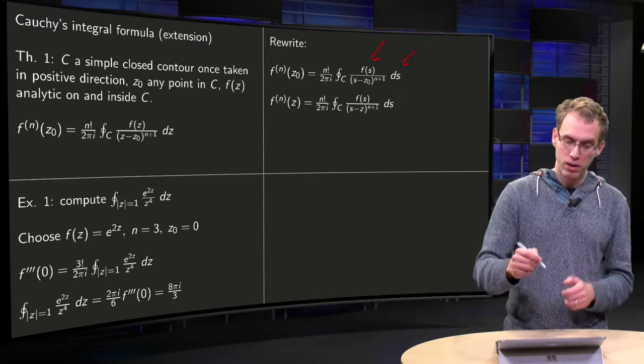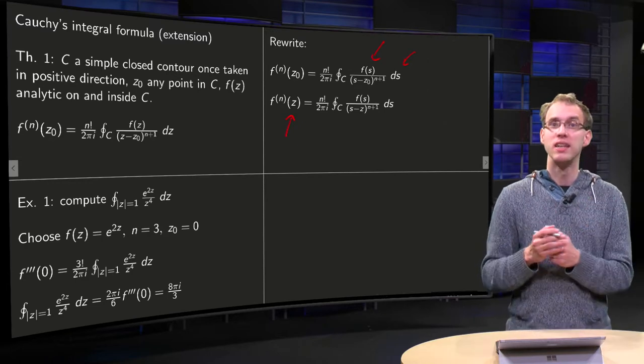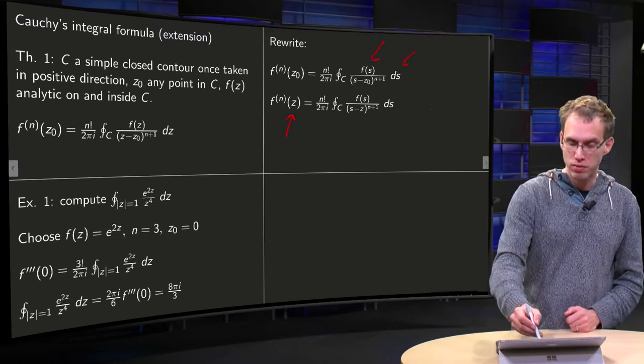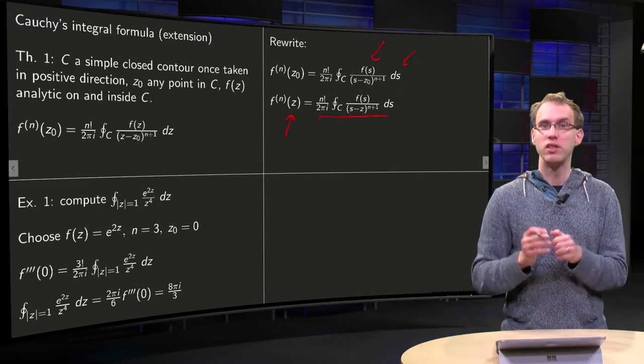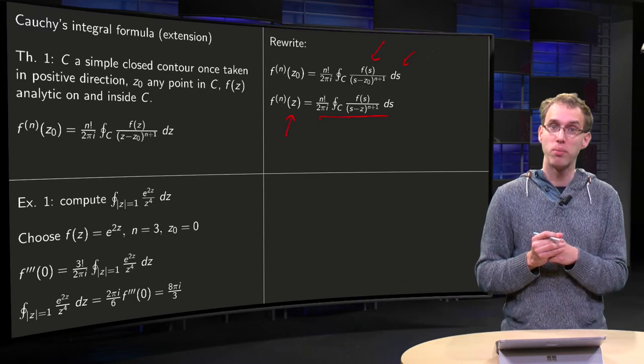Well, we want to compute the nth derivative at z, so then we replace z0 by z. Okay, that's also fine. Now we've just renamed some of the variables, and we still have the generalized version of Cauchy's integral formula.